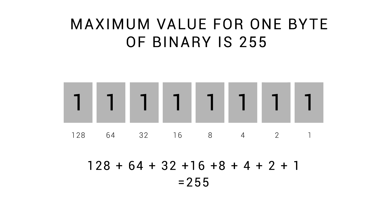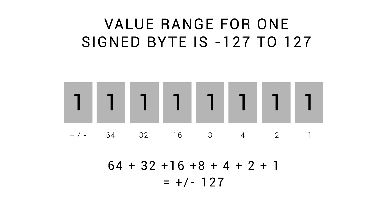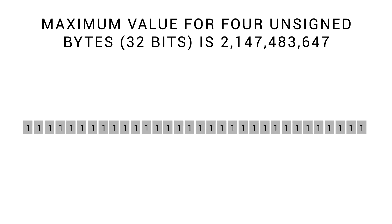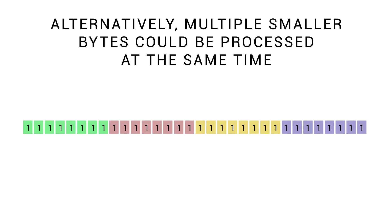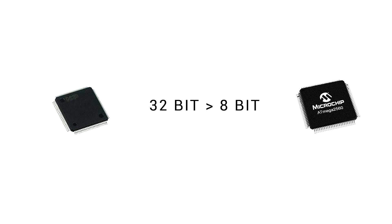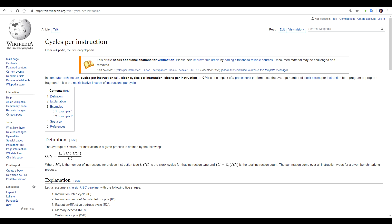So what happens when we have a 1 in every column for 8 bits? The maximum value we can have is 255. If we want a negative number, we have to give up the leftmost bit — it becomes a signed bit denoting either positive or negative — giving us a range of minus 127 to 127. When dealing with 32 bits, the maximum value we can make is over 2 billion. So 32-bit can handle much bigger values, or alternatively, multiple values at once — imagine crunching four 8-bit values at once instead of one large 32-bit value. Basically we can do a lot more in each cycle, and that's a big advantage.